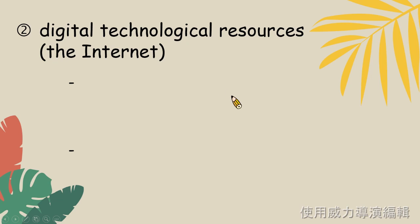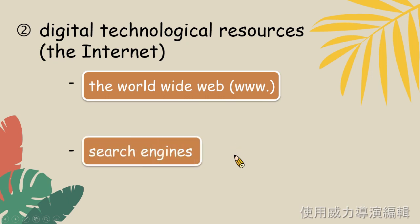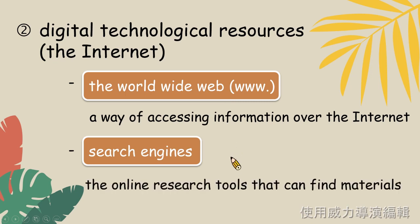當我們想搜尋資料上網的時候,以下有兩大重點。 第一個是the world wide web, and the second is search engines. The world wide web means a way of accessing information over the internet. The search engine means the online research tool that can find materials. 簡單來說,search engines是將我們要查詢的資料key入關鍵字,然後透過the world wide web,也就是www這個媒介,就可以通往到我們所要查詢的資訊網站。